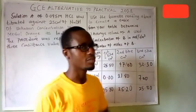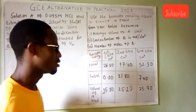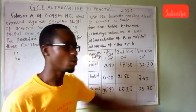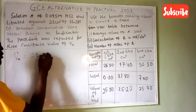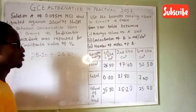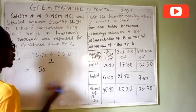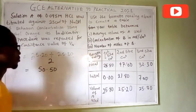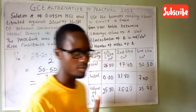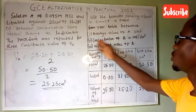To find the average volume of acid used (Va), I write out the values. Since 25.20 and 25.30 are quite close to each other, I'll use those two: (25.20 + 25.30) divided by 2. That gives 50.50 divided by 2, which equals 25.25 cm³. So Va = 25.25 cm³.